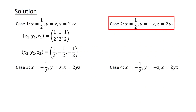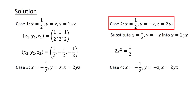For Case 2, we substitute x equals half and y equals minus z into the equation x equals 2yz, to obtain minus 2z squared equals half. Since the left-hand side is non-positive while the right-hand side is strictly positive, there are no real solutions for this case.